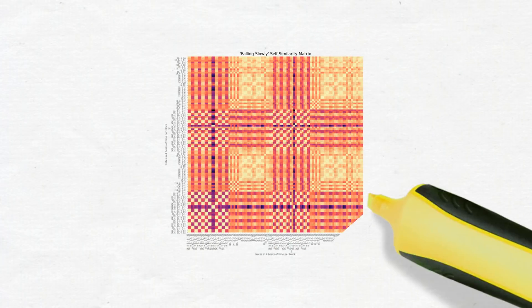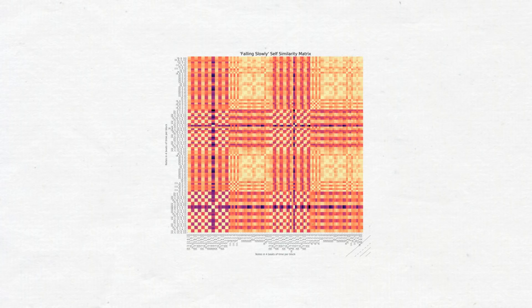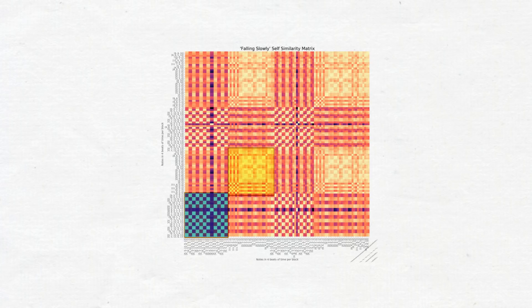This in mind, we can use what is called a self-similarity matrix. Simply put, the matrix uses math to visually show that beginning, middle, and an end.